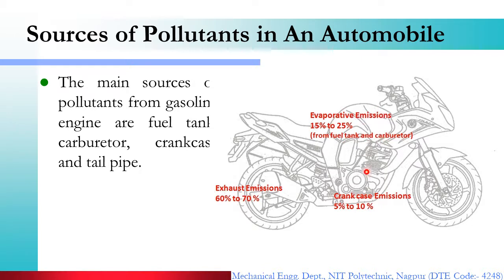So the exhaust emission constitutes 60–70% of total emission. These are the sources of pollutants in an automobile. Any type of automobile has these three sources of pollutants released into the atmosphere.